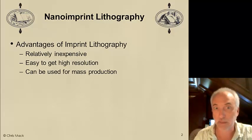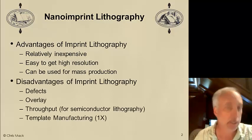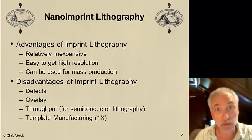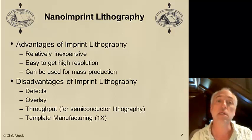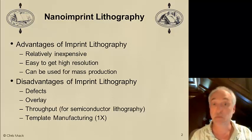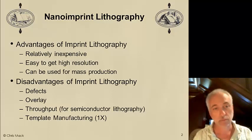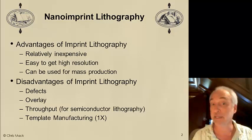There are some significant drawbacks to imprint as well. The main disadvantage is defects — at least for those processes that are sensitive to defects. Some processes are inherently not very sensitive to small defects, and for those applications, imprint is almost perfect. But in semiconductor manufacturing, even one small defect is enough to kill an entire chip. There, we must get defect densities extremely low, and that's a real challenge.